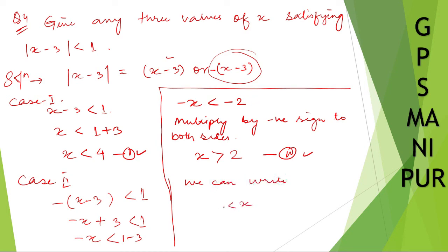Now for any three values of x: x is greater than 2 and less than 4, like 2.5, 2.7, 3.5. Any number like this. Thank you so much, we will meet in the next video.